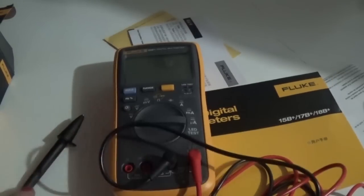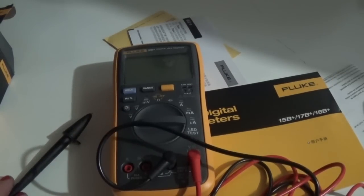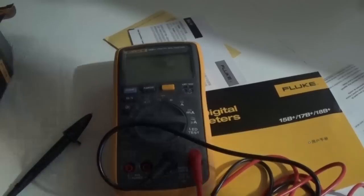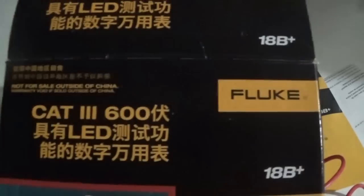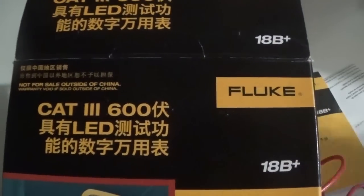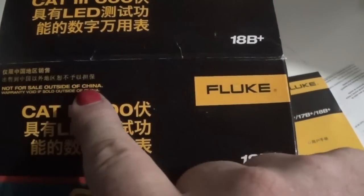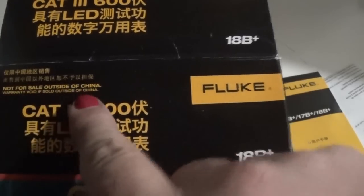And what about this multimeter? Well when I got it, I have a good look and it's got things like this. It's void if sold outside of China. Why is it void if sold outside China?